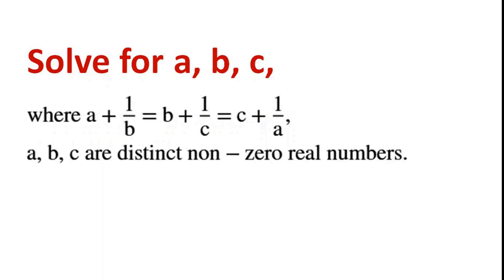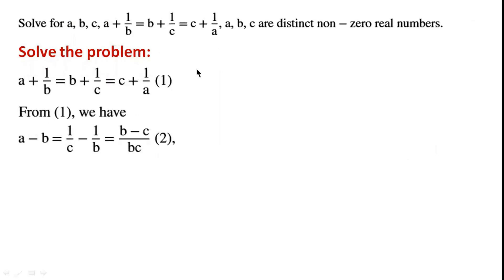Solve for A, B, C where A plus 1 over B equals B plus 1 over C equals C plus 1 over A. A, B, C are distinct non-zero real numbers. From the first two algebraic expressions, we have A minus B equals 1 over C minus 1 over B equals B minus C over BC.